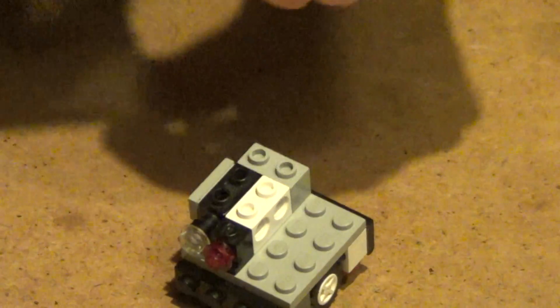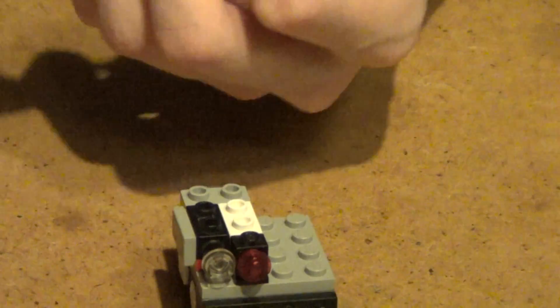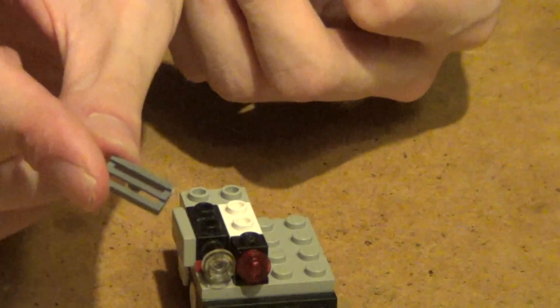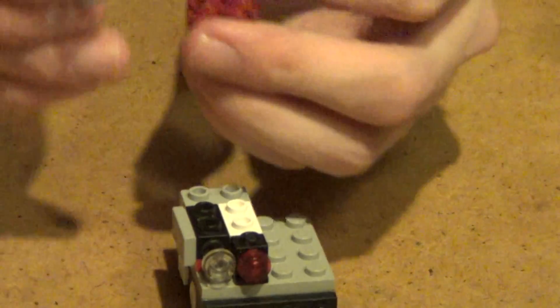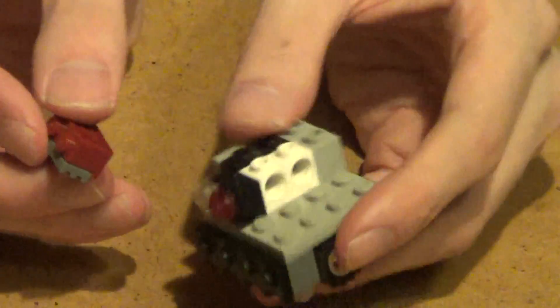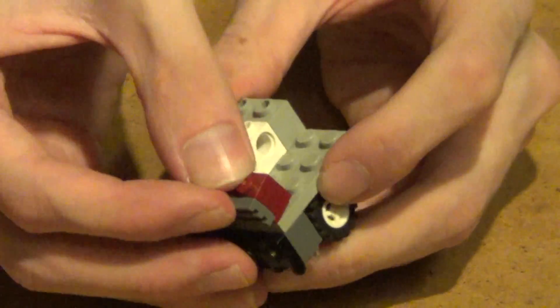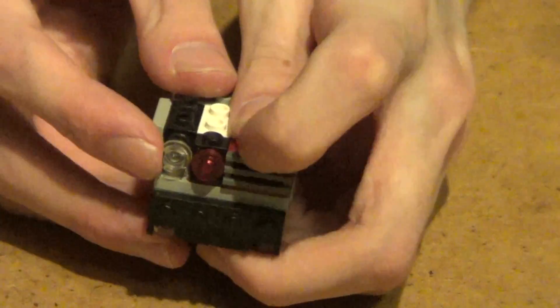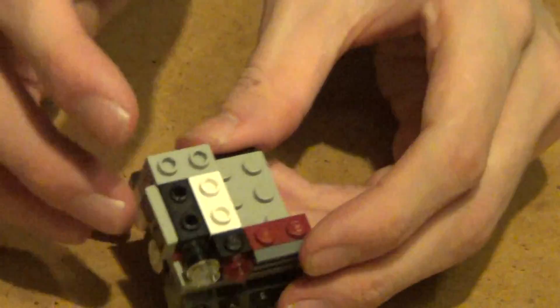And take two of these, stick them side by side, and take one of these one by two grill so we can stick them together. Put that on the front, that can act as whatever you want, whatever you want it to be.